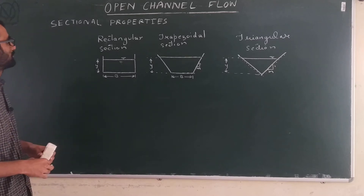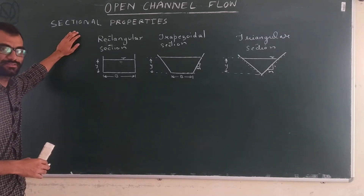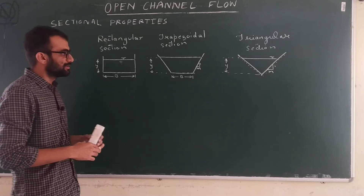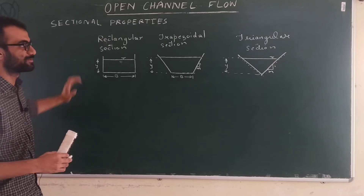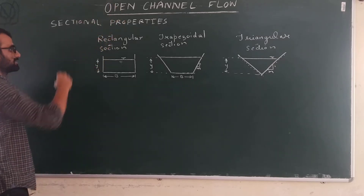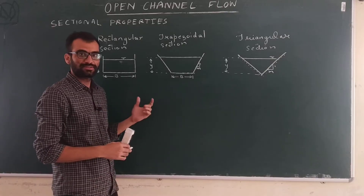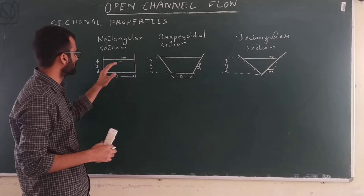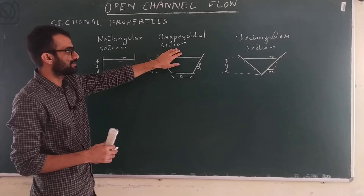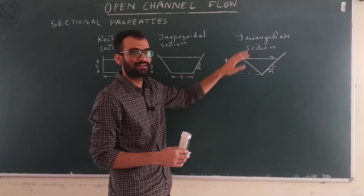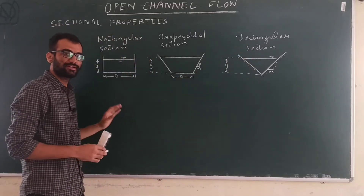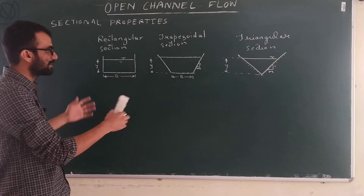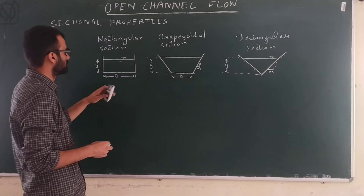Hello everyone. Today we are going to talk about the sectional properties or the properties of open channel flow sections. These properties are required to solve the open channel flow problems. We will discuss the properties simultaneously and find out the expressions for three commonly encountered sections: rectangular, trapezoidal, and triangular. Once you understand these basic sections, you can easily calculate the rest.